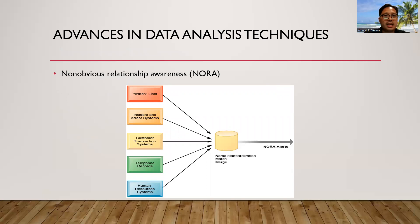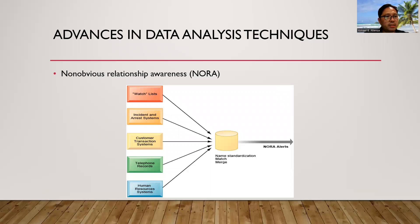Advances in data analysis technique: this is Non-Obvious Relationship Awareness, or NORA. It is a new data analysis technique which can take information about people from many disparate sources such as employment applications, telephone records, customer listings, and wanted lists, and correlate relationships to find obscure hidden connections that might help identify criminals or terrorists.